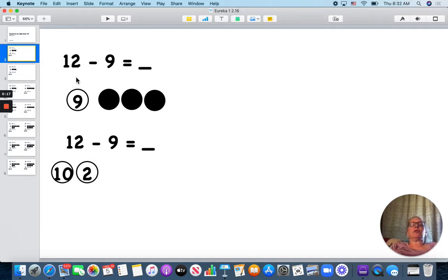Here we have 12 minus 9. If I'm going to count on, I would say 9 and count until I hit 12. So let's try that. 9, 10, 11, 12. There are three dots, so 12 minus 9 equals 3.